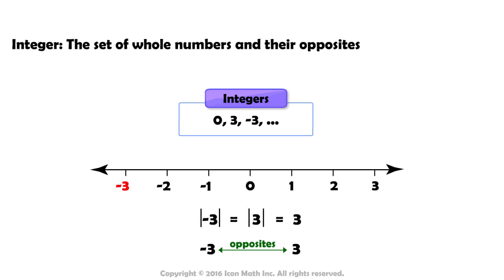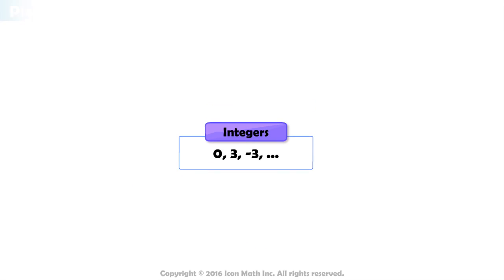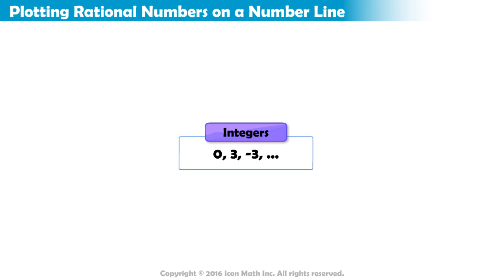Notice that negative 3 is less than 0. Any number with a negative sign is less than 0. In this lesson, we will learn how to plot integers and rational numbers on a number line.